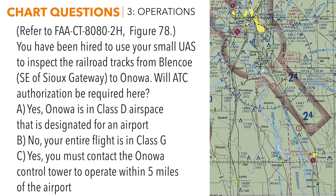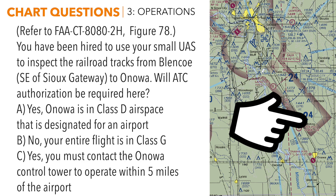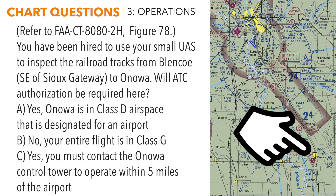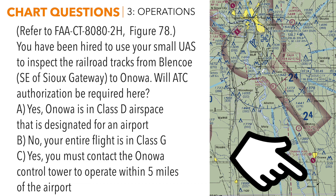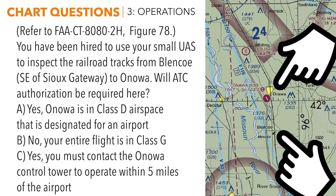Staying on figure 78 for the next question: you've been hired to use your small UAS to inspect the railroad tracks from Blenco — southeast of Sioux City — to Onewa. Will ATC authorization be required? Find your geographic reference: Sioux City is right here. Follow the railroad tracks — those are the black lines with tick marks across them — out of Sioux City to find Onewa, and continuing along those tracks we find Blenco. This is the area we'll be operating, inspecting the tracks between these two points.